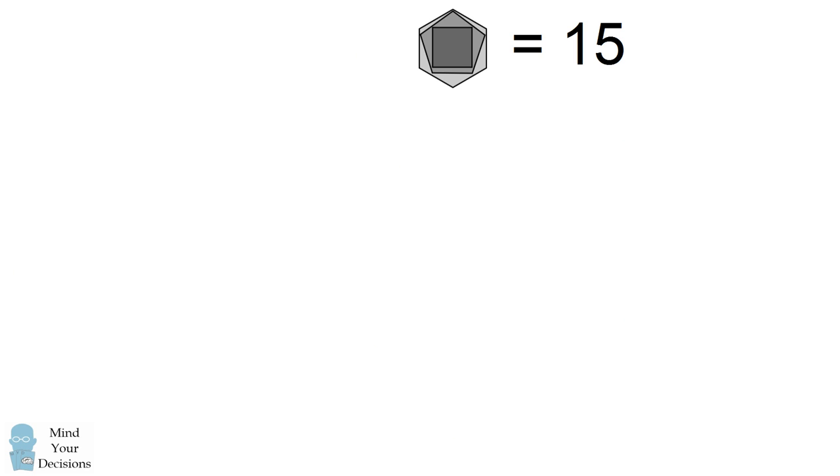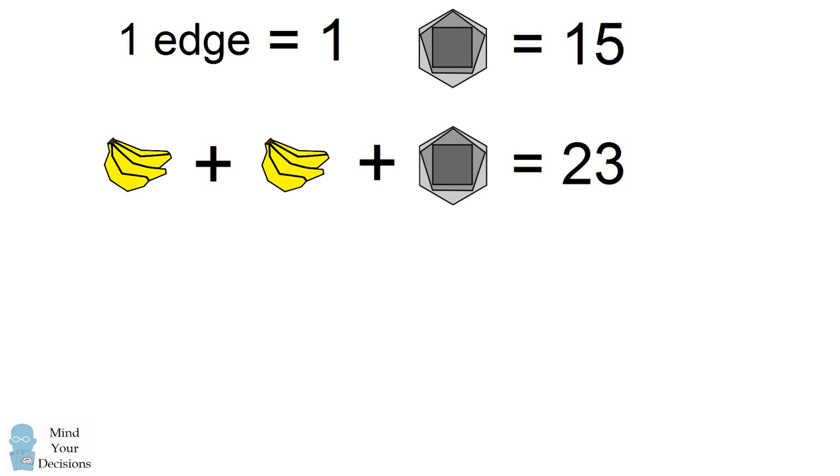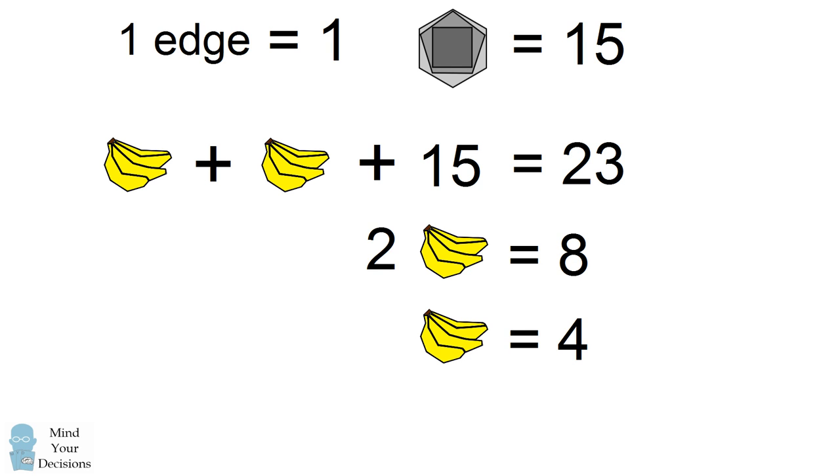We'll take this information and use it to solve the next equation. We can replace the hexagon figure with the value of 15 that we just figured out. We now have two bunches of bananas that will be equal to 23 minus 15, which is 8. We can simplify that a single bunch of bananas is equal to 4.